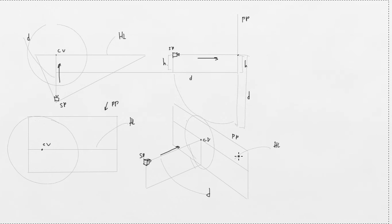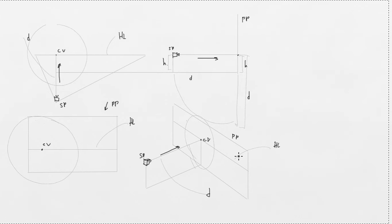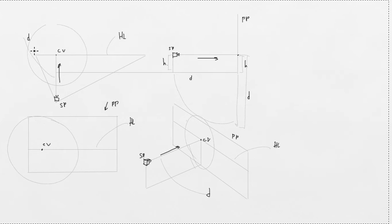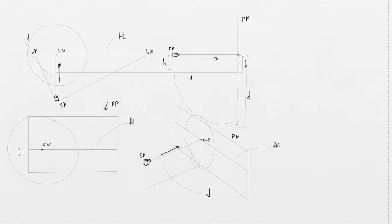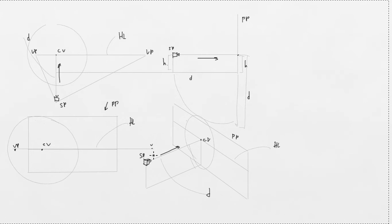The next thing is probably the most important: vanishing points. A vanishing point is the point where parallel lines converge in perspective. We'll discuss it more deeply in next lessons, but for now I just want to point that out. Vanishing point here, vanishing point here. Vanishing points could be out of the picture plane — actually that's good, because you'll get less distortion.